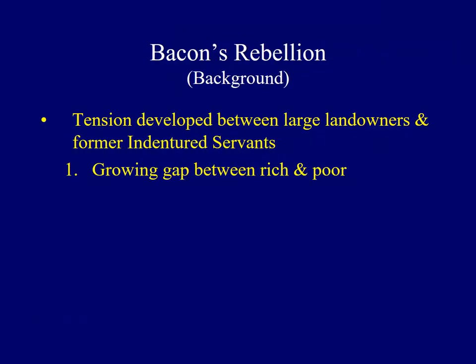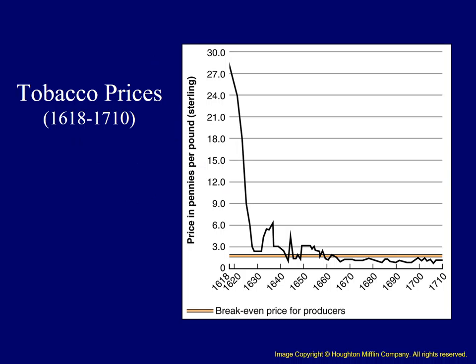Another factor influencing the relationship between former servants and large landowners was the dramatic drop in the price of tobacco. This chart indicates the dramatic changing price of tobacco. Particularly by the 1660s, the price was at times at the break-even point at best for tobacco farmers. Can you imagine working as an indentured servant for seven years, only to discover you'll have to work as a laborer on someone else's land because you're unable to make ends meet on your own?